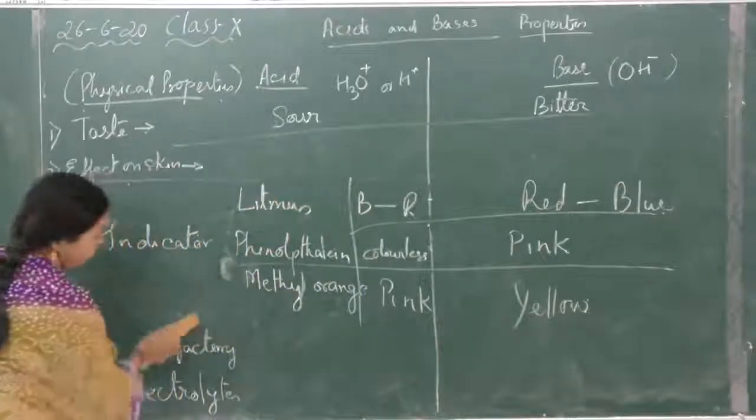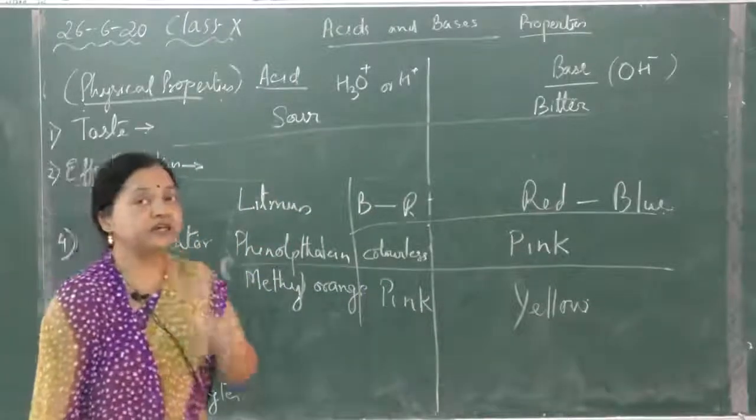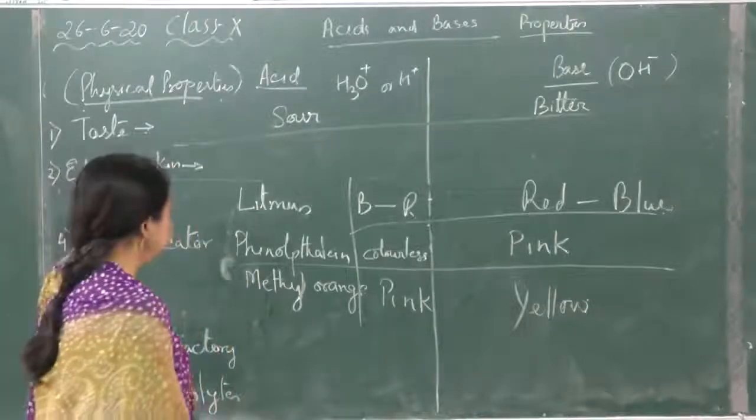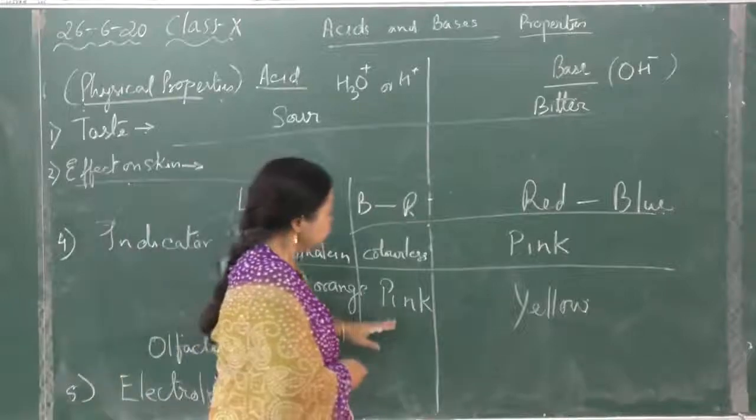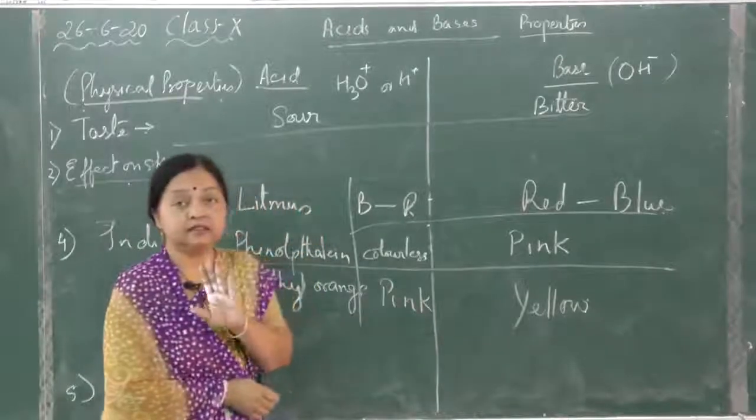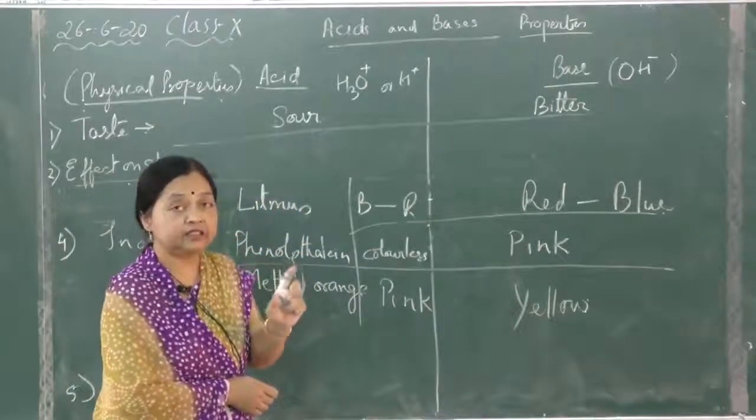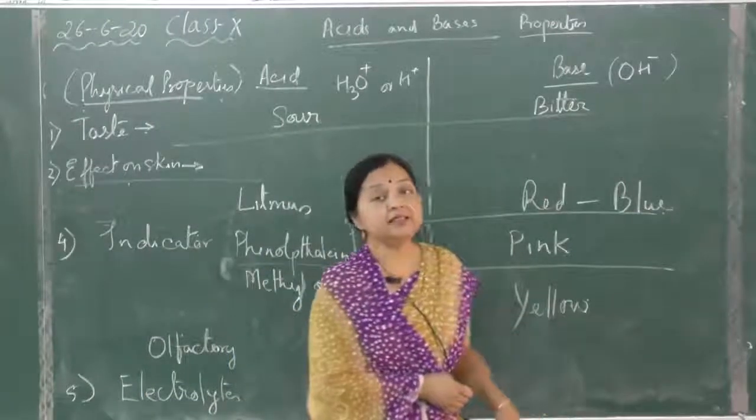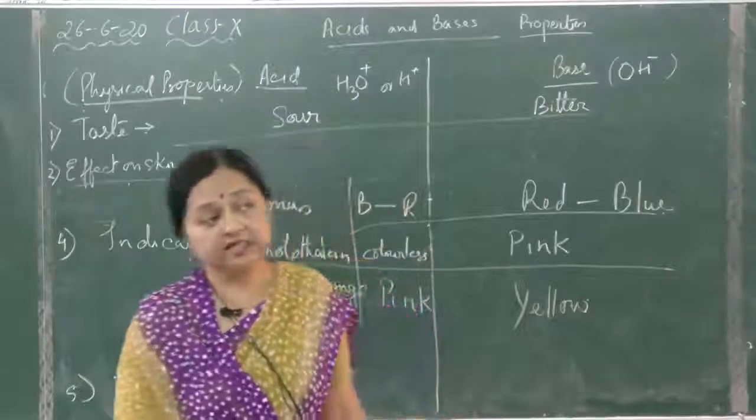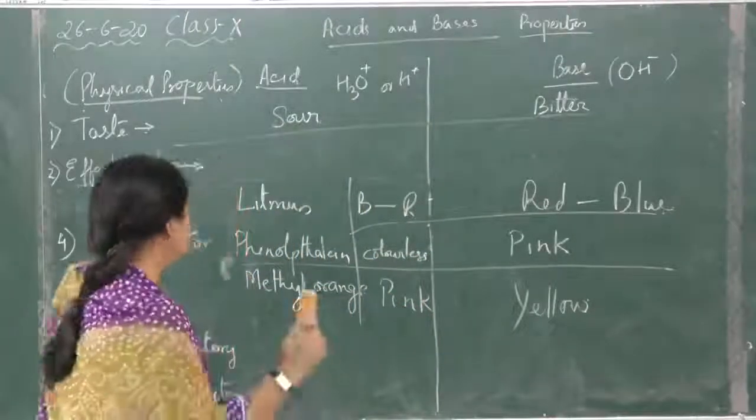Then we have olfactory indicators. Olfactory means related to the nose, so it means the smell. Onion has a typical smell. In acid it remains intact, means the smell is not affected in acid. But if it is put in alkali, then the smell is not retained. In alkali the smell of onions are not retained. So those are olfactory indicators.